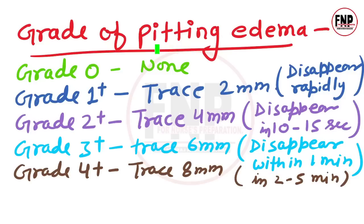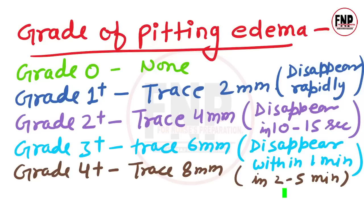Edema grading: body mein edema present ho aur press karne par pit ban jaata hai; us response ke aadhar par edema ki grade decide ki jaati hai. Grade 0: edema nahi. Grade 1+: 2 mm trace, turant disappear ho jaye. Grade 2+: 4 mm trace, 10–15 second mein disappear. Grade 3+: 6 mm trace, ek minute tak. Grade 4+: 8 mm ya zyada trace, 2–5 minute mein disappear. Ye cheezein previously exam mein poocha gayi hain, important hain.